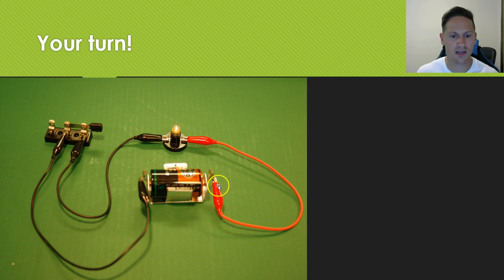Now the components of this circuit here, we've got our battery, we've got our positive end, and our negative end. We have a switch, now this is a funny looking switch, but that's what it is. And that's currently in the on position, or the closed.